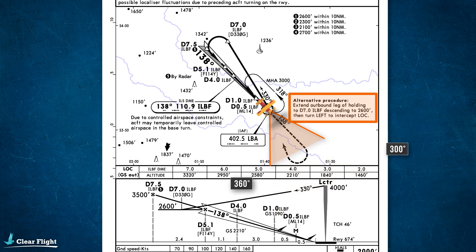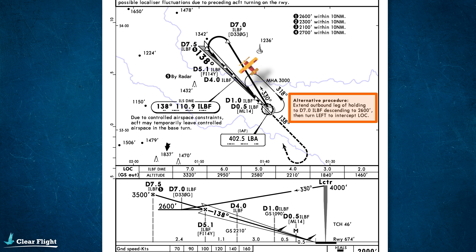This alternate procedure is quite straightforward. From the LB-Alpha NDB, you make a left turn and fly the outbound leg of the hold as normal. At the end of your hold outbound timing, you would then extend the outbound leg of the hold to D7 from the India LB-FO, descending to altitude 2600 feet. From there, turn left to intercept the localizer and fly the ILS approach.